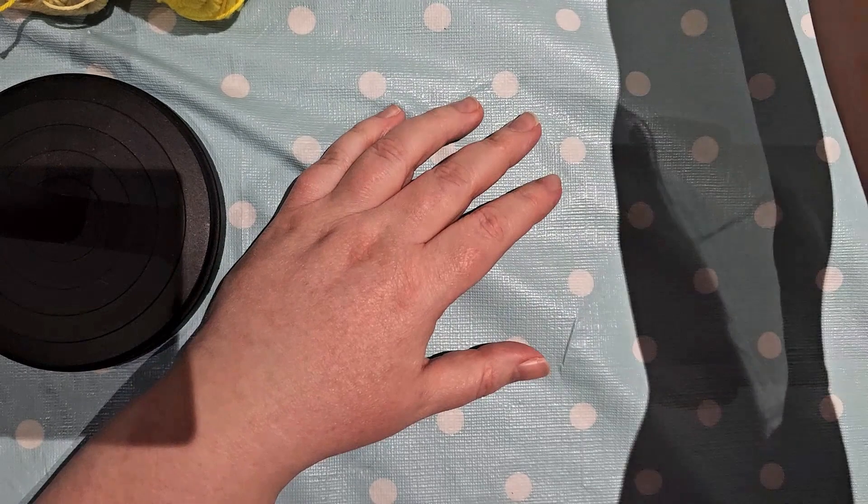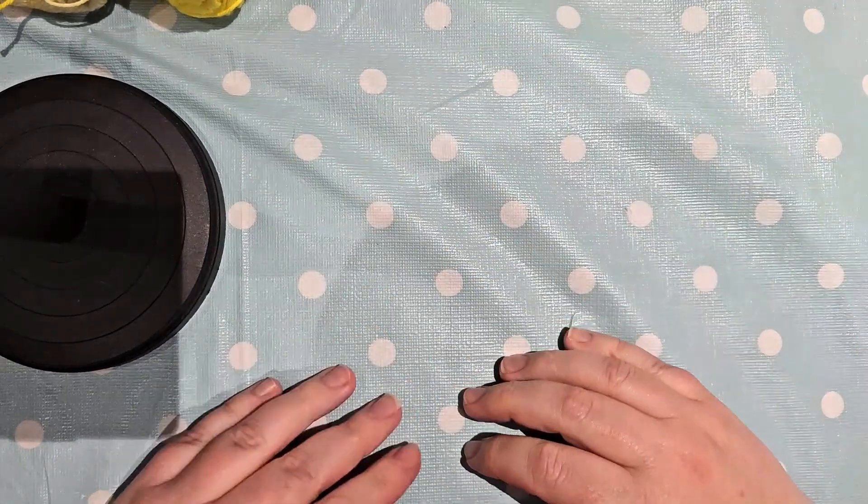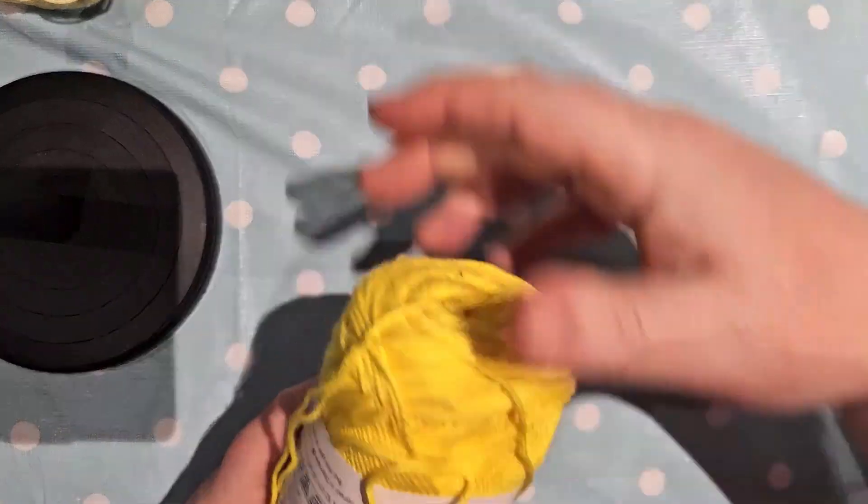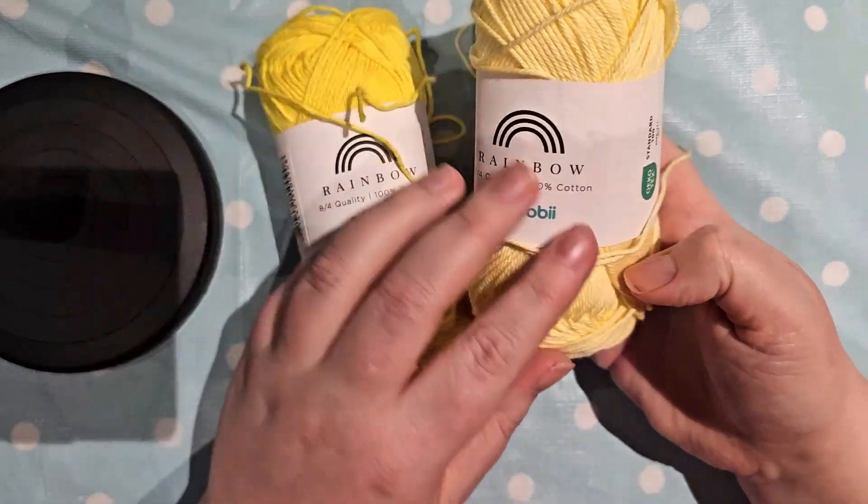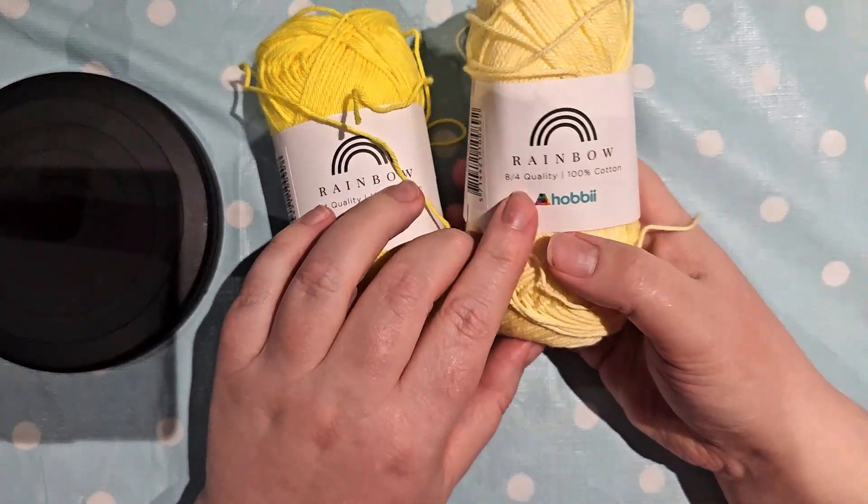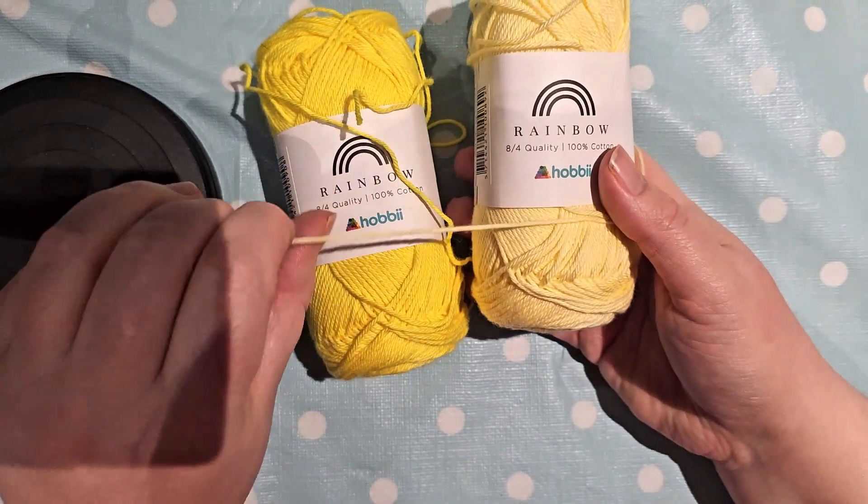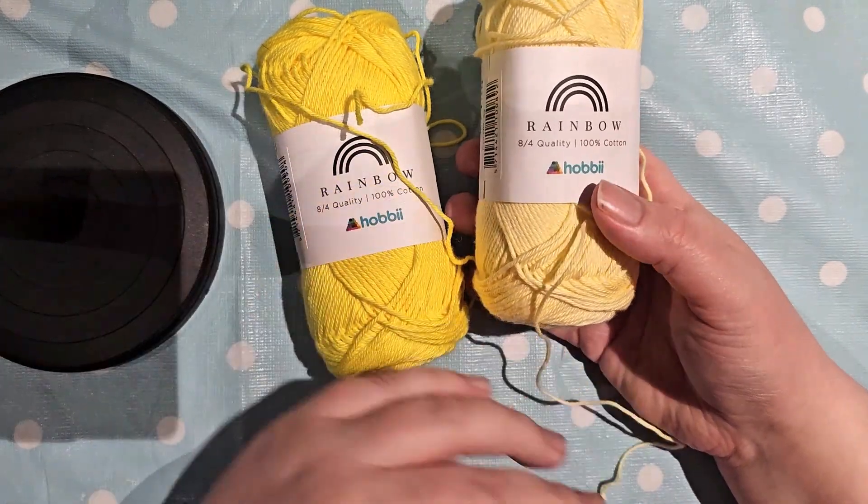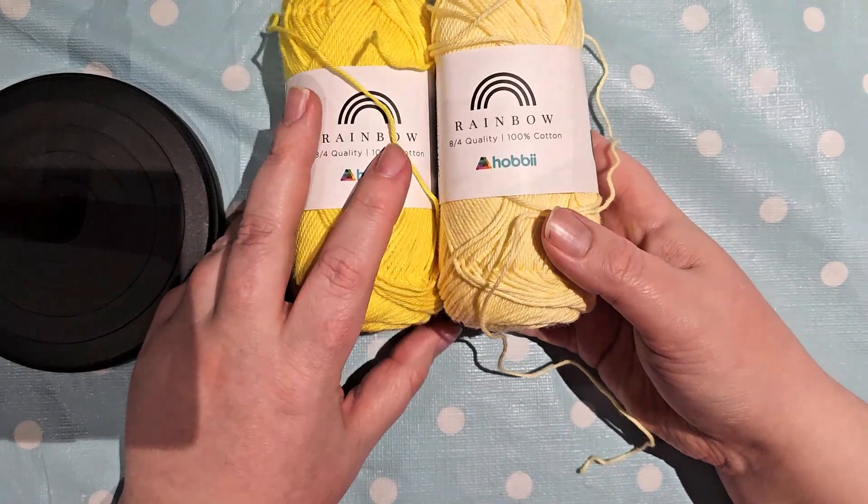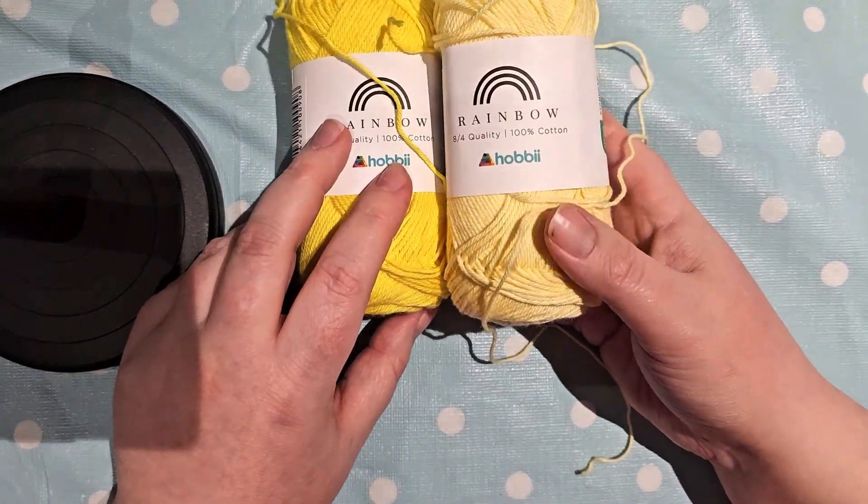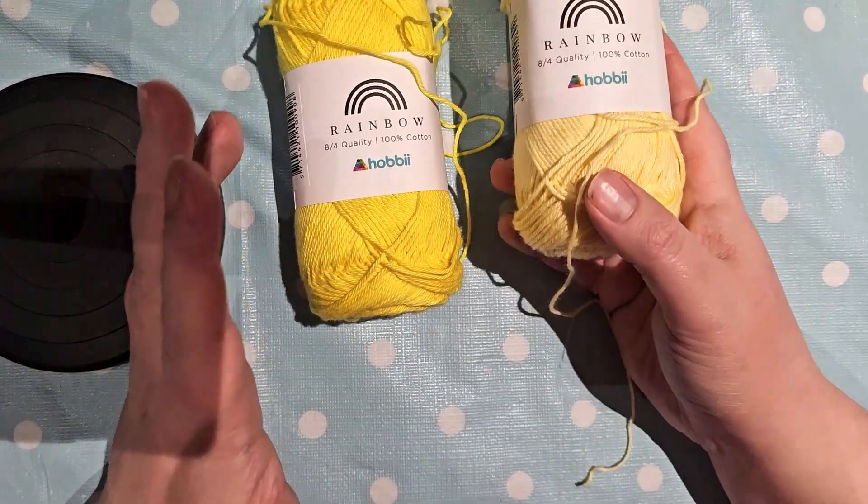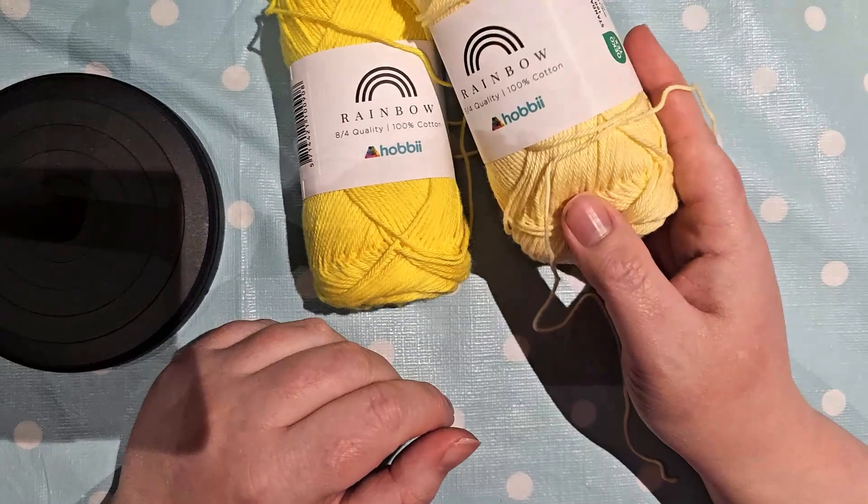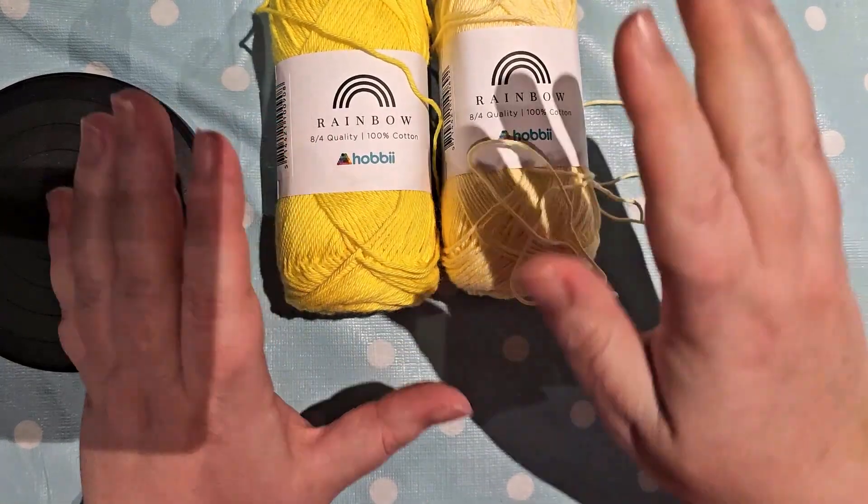The main things that you're going to need is yarn in two shades of yellow or whatever colors you like. For this I'm going to use the Hobby Rainbow Cotton, this is the 8-4. This is the really fine weight one which is really nice. They do seem to look especially good when they're made with cotton yarn but you can use other yarns. This pattern should work regardless of the size as long as the hook size matches.